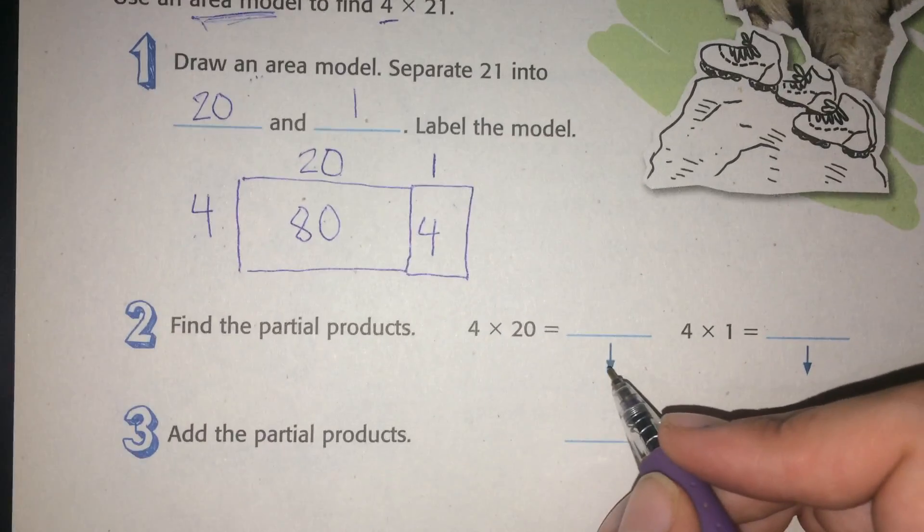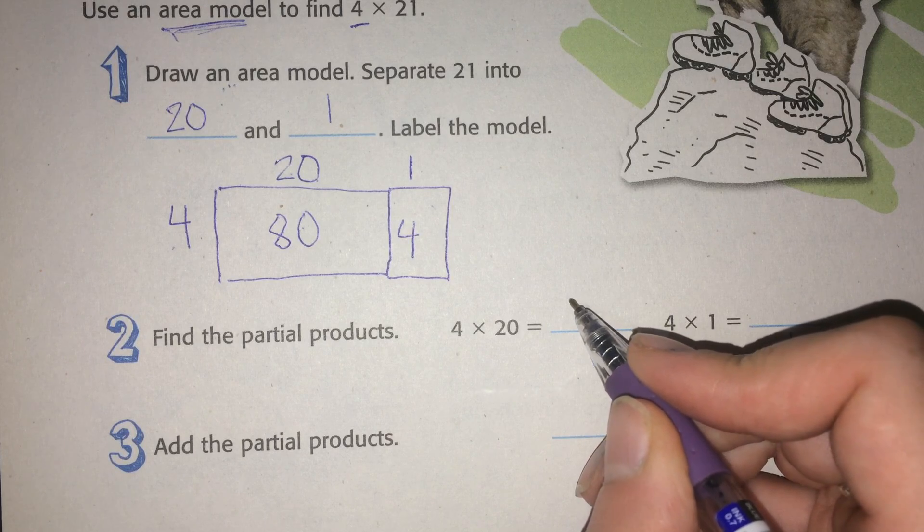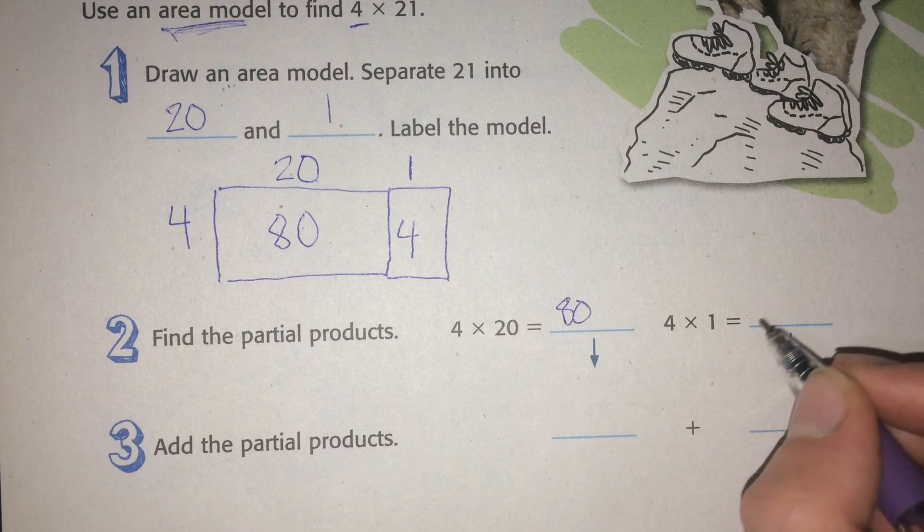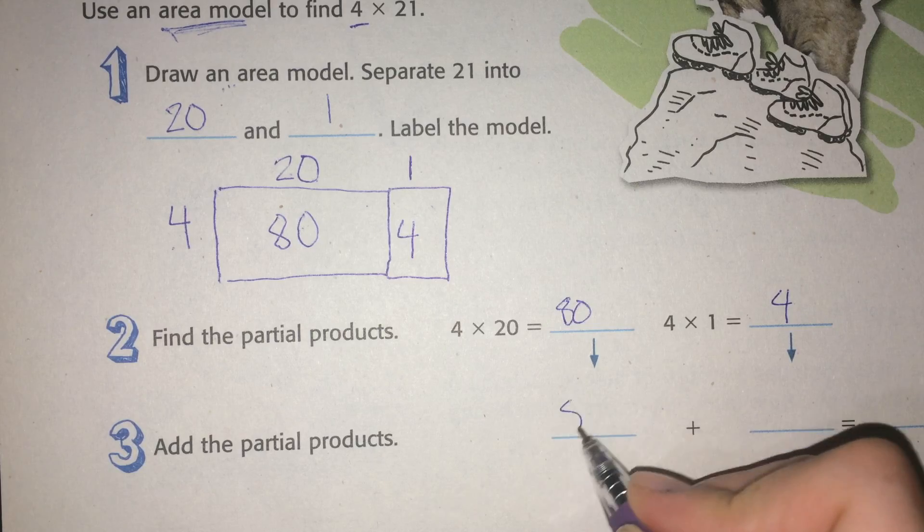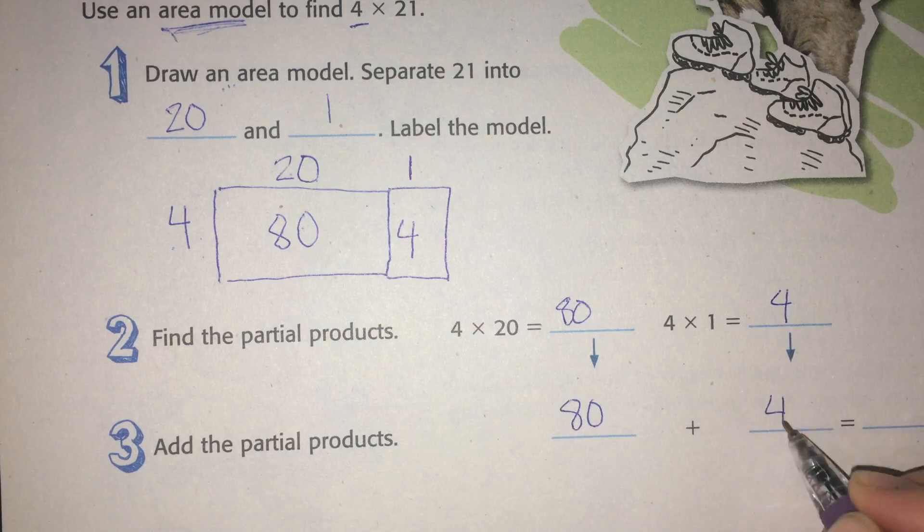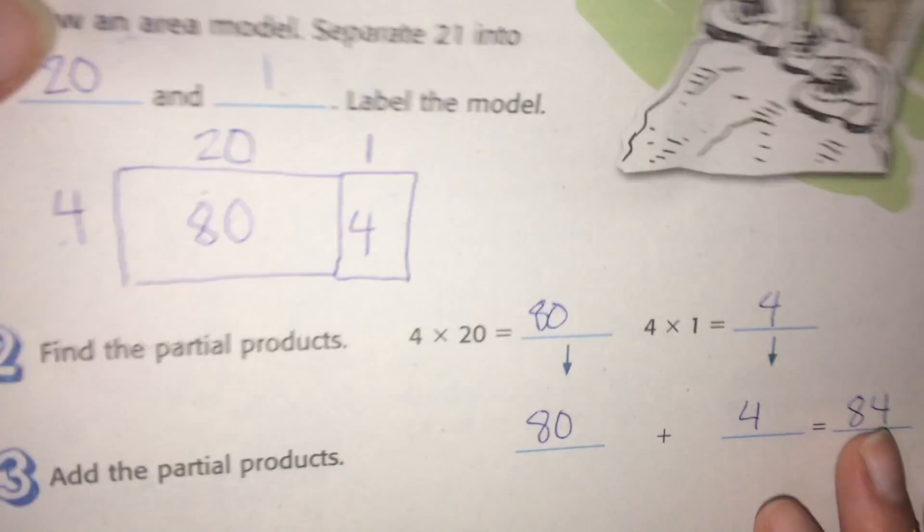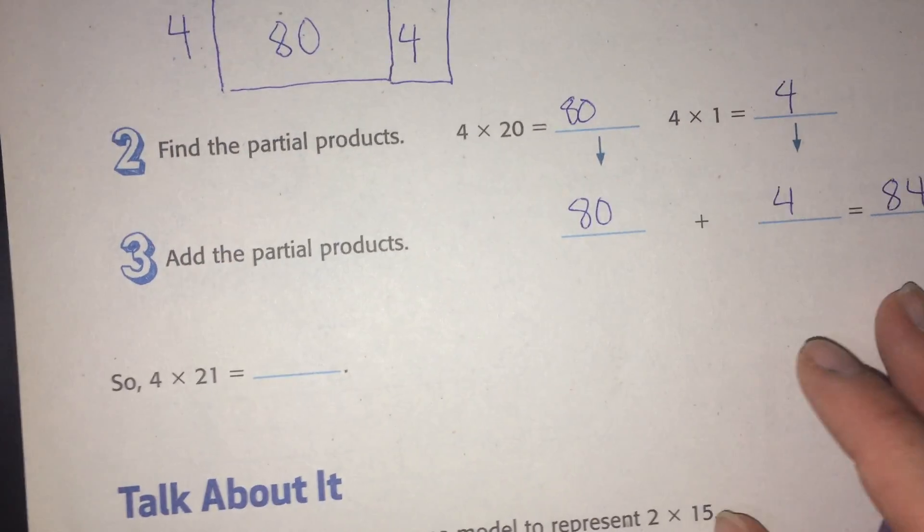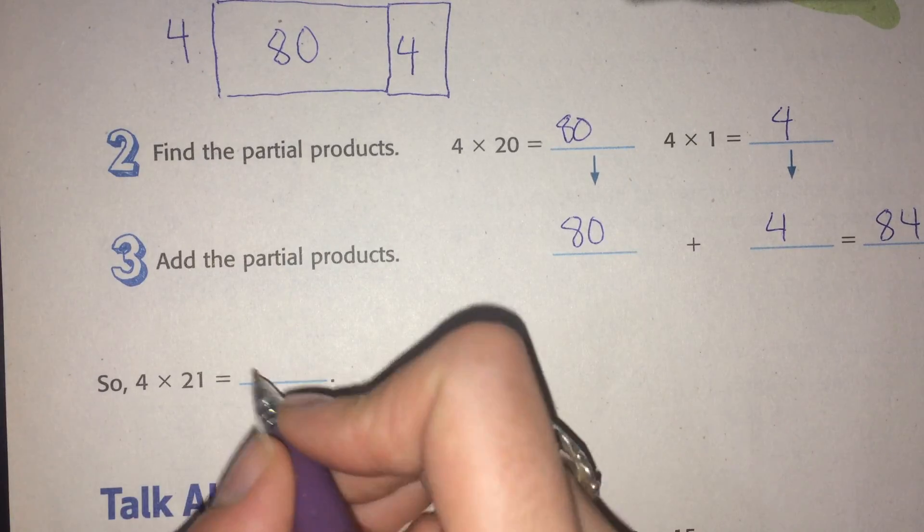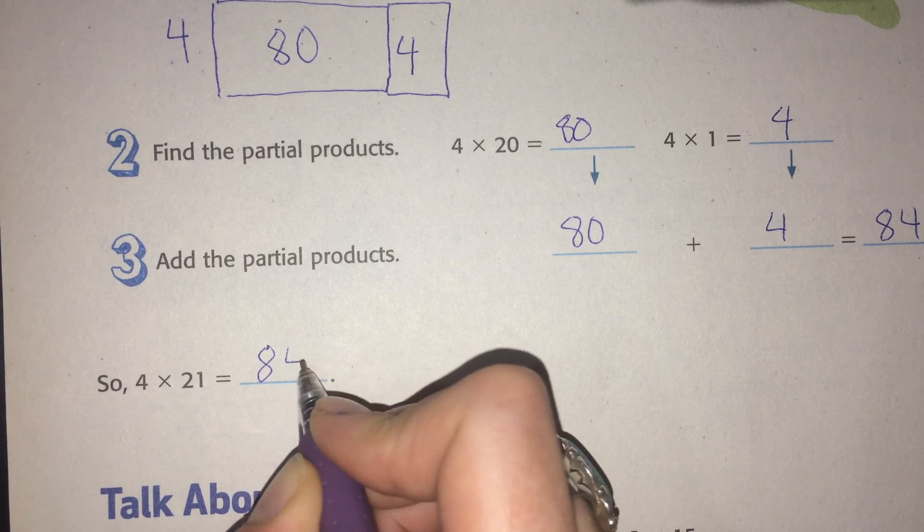So find the partial products: 4 times 20 is 80, and 4 times 1 is 4. So 80 plus 4 equals 84. And then we have to add those partial products, which we did, to 84. So 4 times 21 is 84.